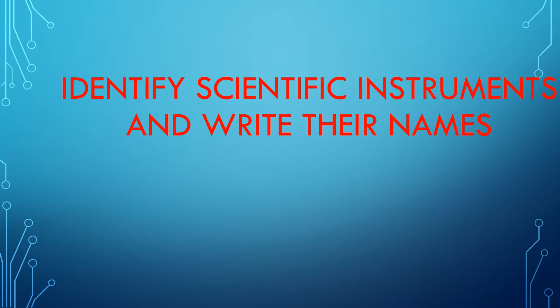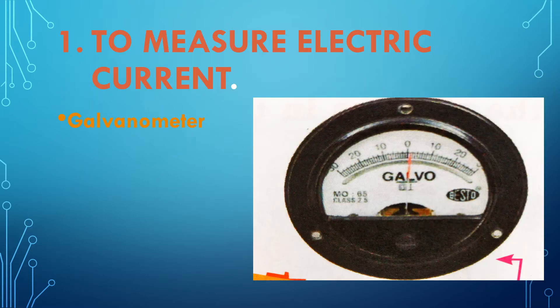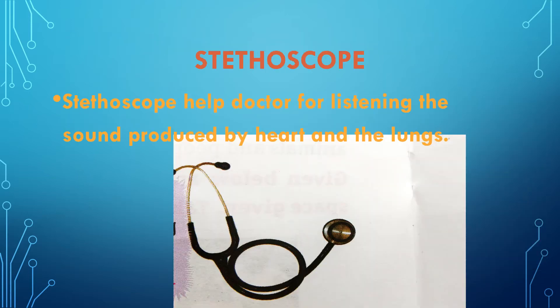Here we have to identify scientific instruments and write their names. Pictures of the scientific instruments are shown and we have to identify them. The first one: to measure electric current, the instrument used is called a galvanometer. Galvanometer is used to measure electric current. The image is also in front of you.